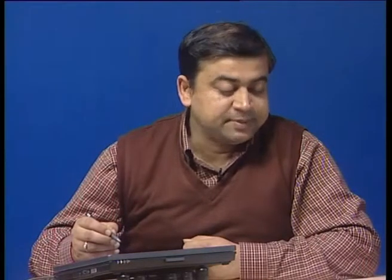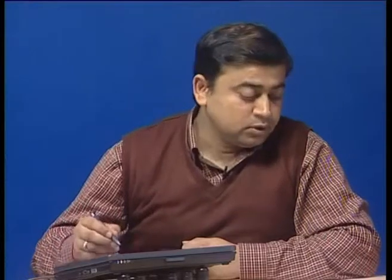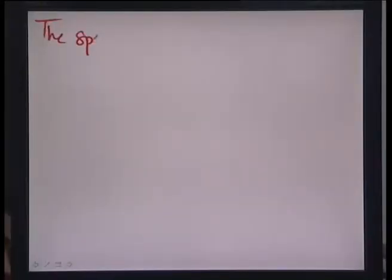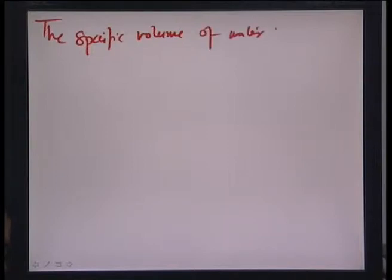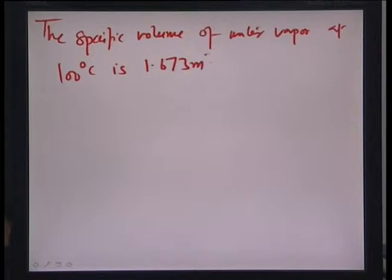Let us now compare what would happen if a thermal mechanism — evaporation — were used to formulate the bubbles instead of electrochemistry. The specific volume of water vapor at 100°C is about 1.673 m³/kg. The mass of water is given by V/ν = (4/3)π·(14×10⁻⁶)³ / 1.673, where 1.673 is the specific volume of water vapor at 100°C from the given data.